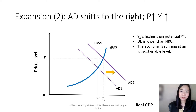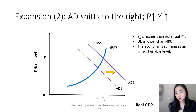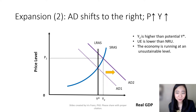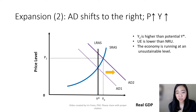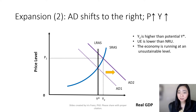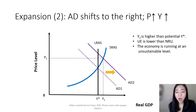Our economic expansion started from an increase in aggregate demand. So consumption goes up, investment goes up, so aggregate demand shifts to the right. As a result, the price level goes up and output goes up.